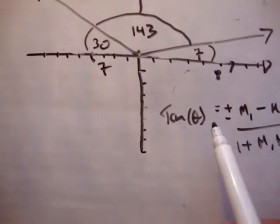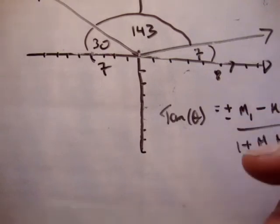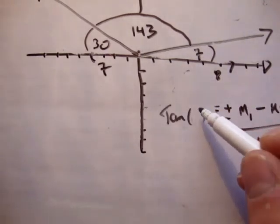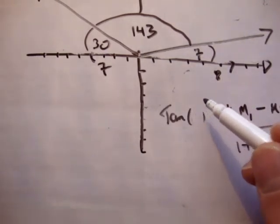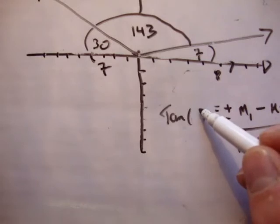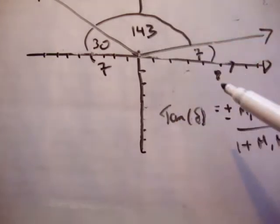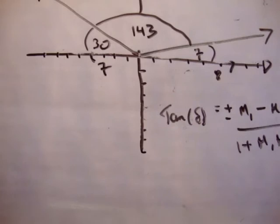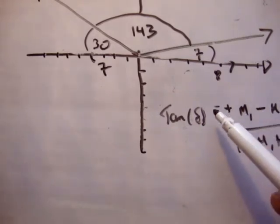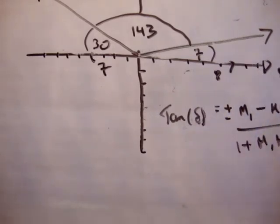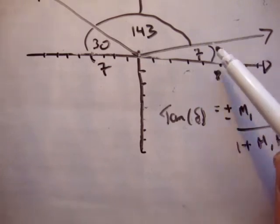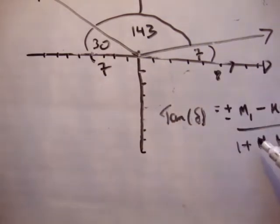So at the moment, we're told that the tan of the angle — I'm going to call it delta — equals the slope of the first vector minus the slope of the second vector, over one plus the product of the slopes.